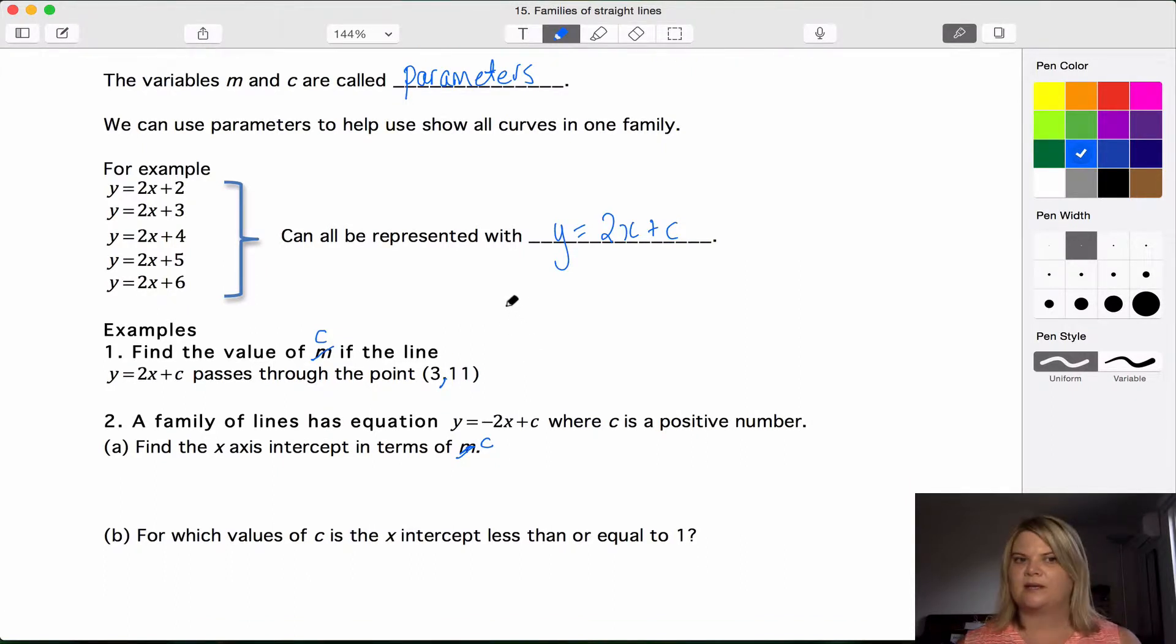Some people get a bit worried when they see other variables other than x and y in their equation, but we just treat parameters like normal numbers. So the first example says find the value of c if this line passes through this point. So it's asking us what the y-intercept is if it goes through this point.